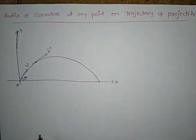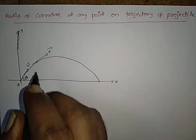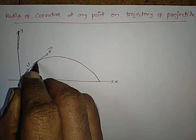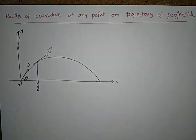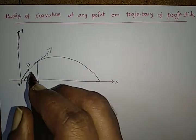Acceleration due to gravity is acting vertically downward direction.